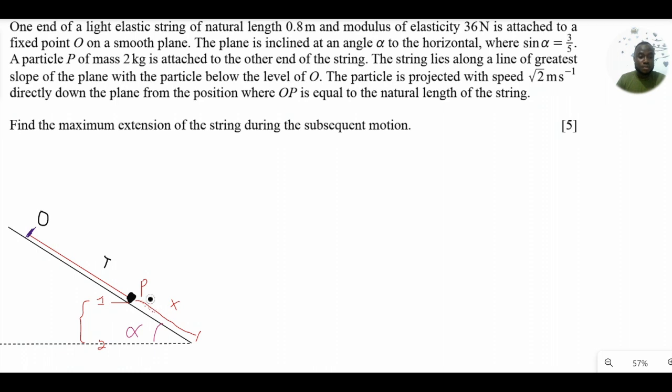Now another way we could have solved this problem would have been to consider the forces that are acting on P while it moves from its point of projection to the maximum displacement position. Now the forces that are acting down the plane include a component of the weight of P which we call mg sin alpha. There's no other force acting in the direction of motion. But then there's a force acting against the direction of motion which is the tension in the string. So this equation says that the acceleration in the direction of motion or the net force in the direction of motion is equal to the component of the weight of P along the slope minus the tension in the string acting up. In this case, however,